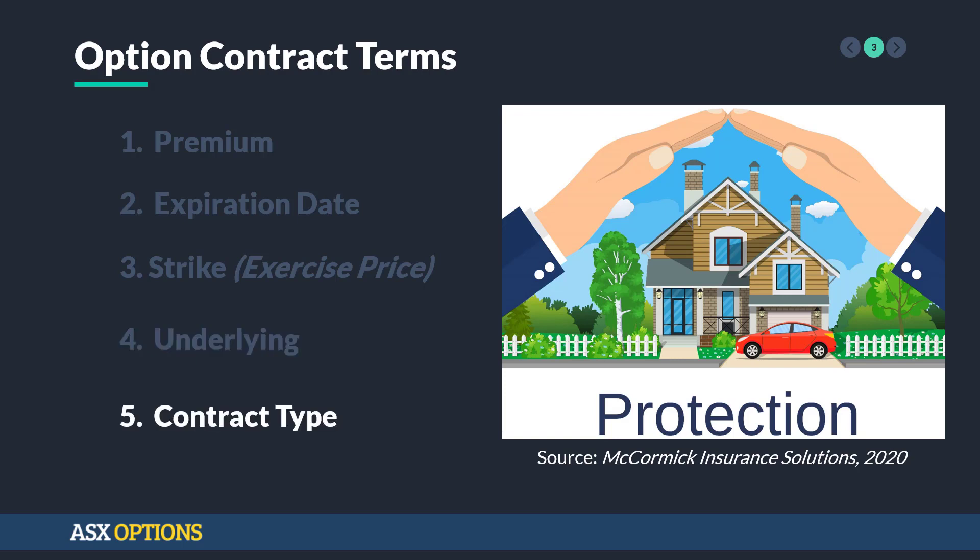And fifth is the contract type — namely calls or puts. Just as with the house insurance example of a put option, where we can sell the house back to the insurer, we can also enter a contract that can buy the underlying at a given exercise price. This is called a call option. Again, we will get more into this later.